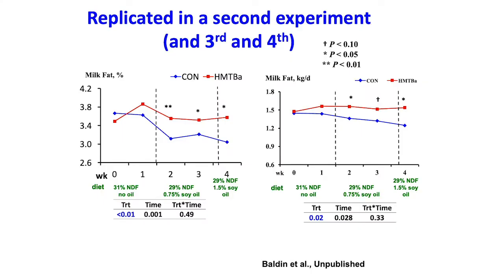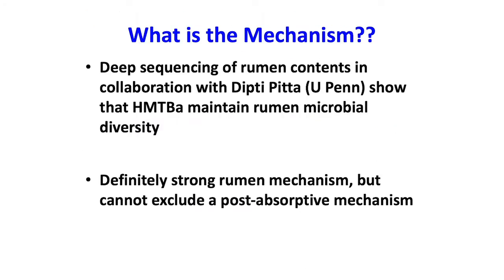We went on to replicate this in a third and fourth experiment. The second replication using a similar approach shows that when we go into moderate and high risk challenge periods, HMTBA prevents the shift to the trans-10 pathway and maintains higher milk fat percent. The mechanism: our recent deep sequencing data show that HMTBA maintains rumen microbial diversity. We're not sure exactly which microbes are important, but it is a rumen effect. We cannot rule out that there's also a post-absorptive mechanism, as methionine does have an impact on liver fatty acid metabolism.